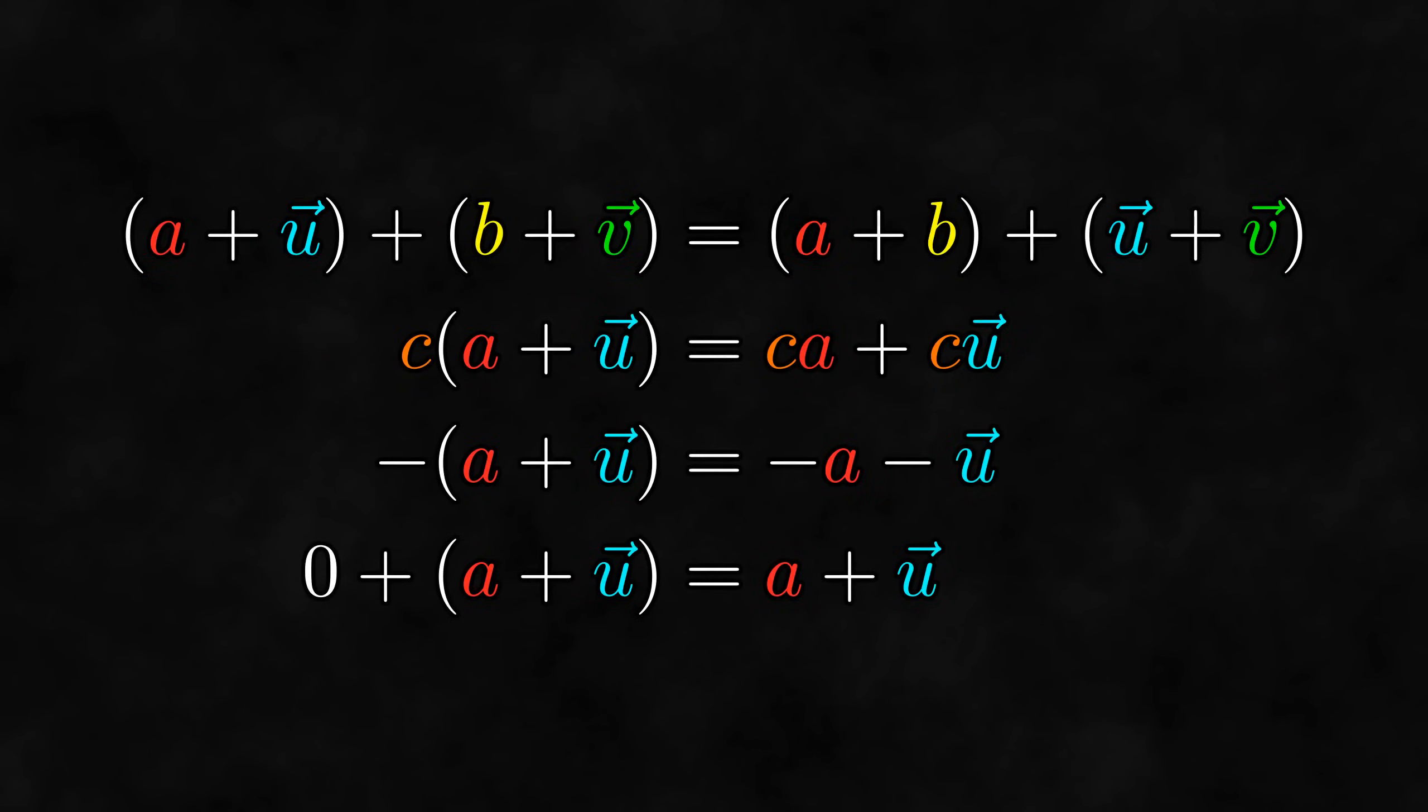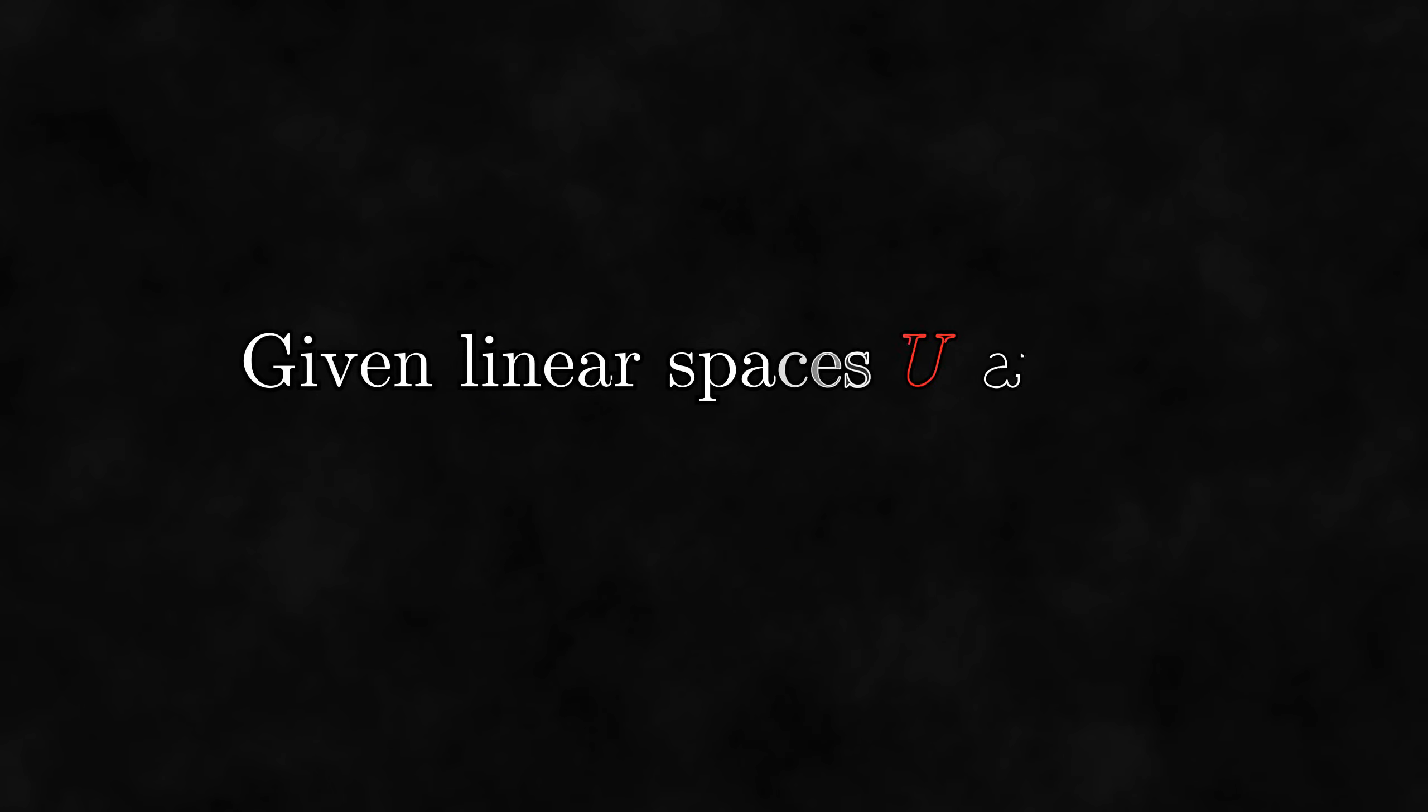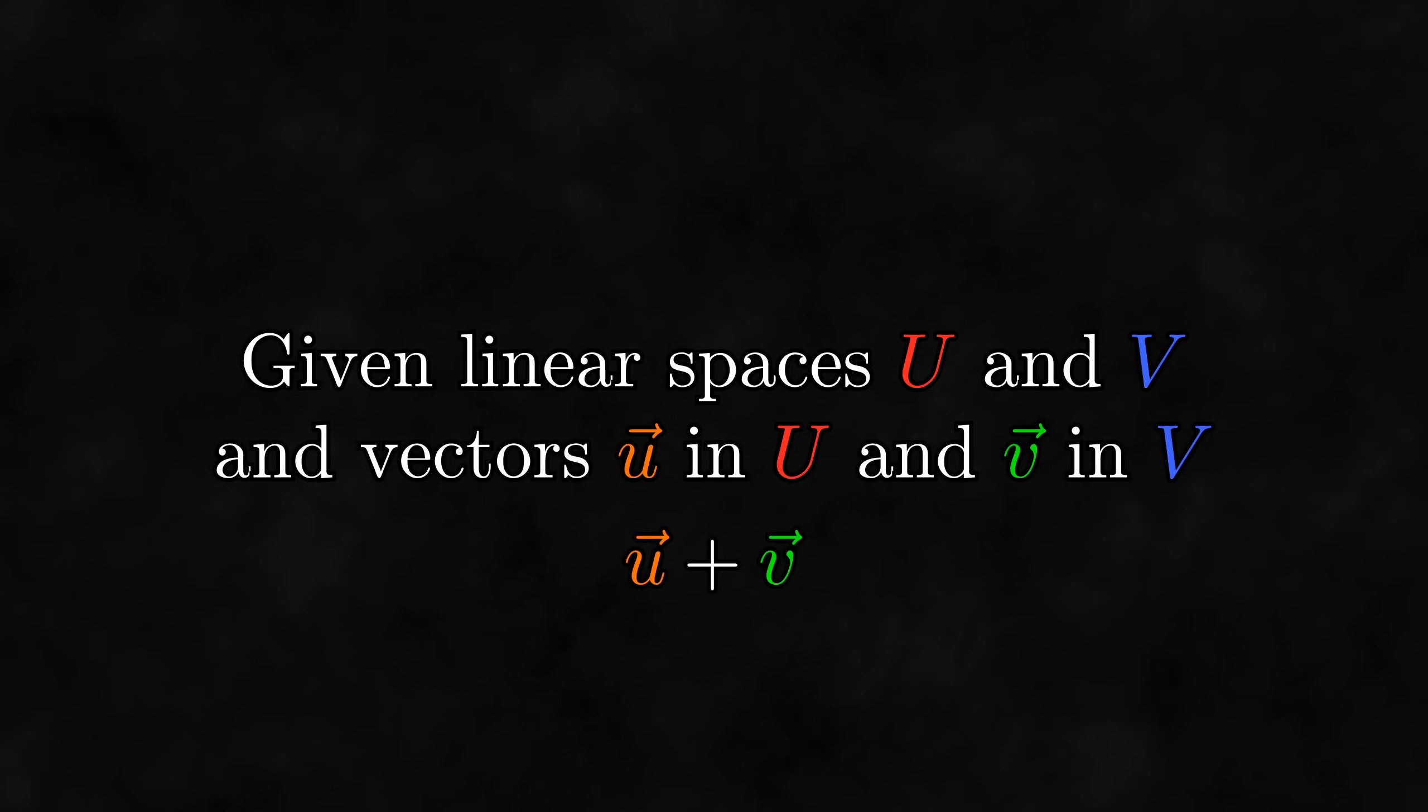Now, I want to go back to these definitions of the operations on paravectors. Notice that these definitions don't really require scalars to be one of the things we are adding. In the end, the only real operations we use on scalars here are addition and scalar multiplication. Wait a minute! That's just the operations of a linear space! Because of this, we can generalize this idea to adding any two different kinds of vectors. In general, given two different linear spaces, we can add vectors from each one together in the same way that we've been adding scalars and vectors together.